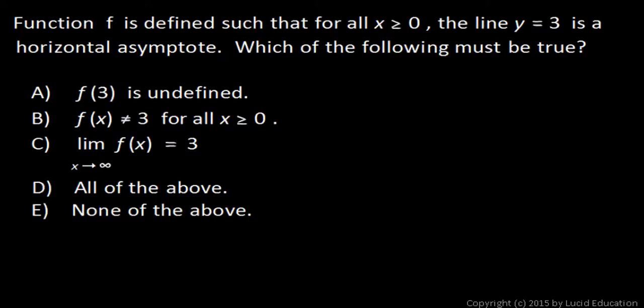Function f is defined such that for all x values greater than or equal to zero, the line y equals 3 is a horizontal asymptote.